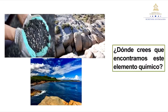Presta atención al siguiente collage de imágenes. ¿Dónde crees que encontramos este elemento químico? Excelente respuesta. Por ejemplo, en cierto tipo de abono o fertilizante, en el océano y las rocas, pero también lo encontramos en otros reservorios que pronto conoceremos.